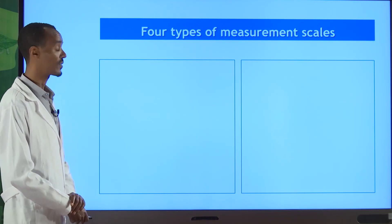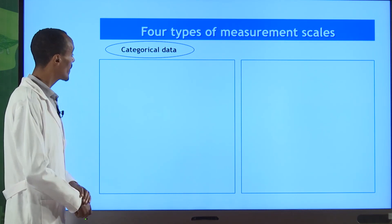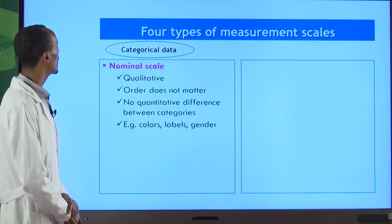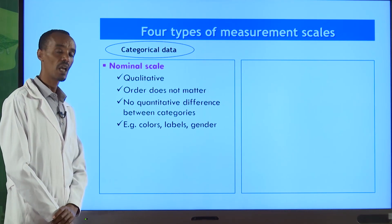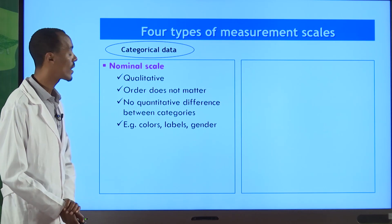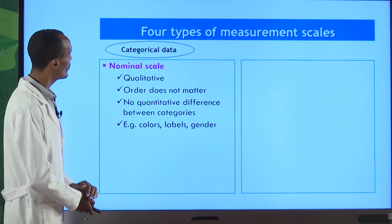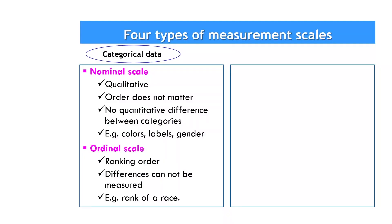Examples of numerical data include age, height, and weight, which are naturally measured using numbers. If you want to tell your age to a colleague you have to use a number. Height and weight are similar — they are number-based. Under each of the two main categories — categorical and numerical — we have two subtypes each, giving us four types of measurement scales total. The first, under categorical data, is the nominal scale.